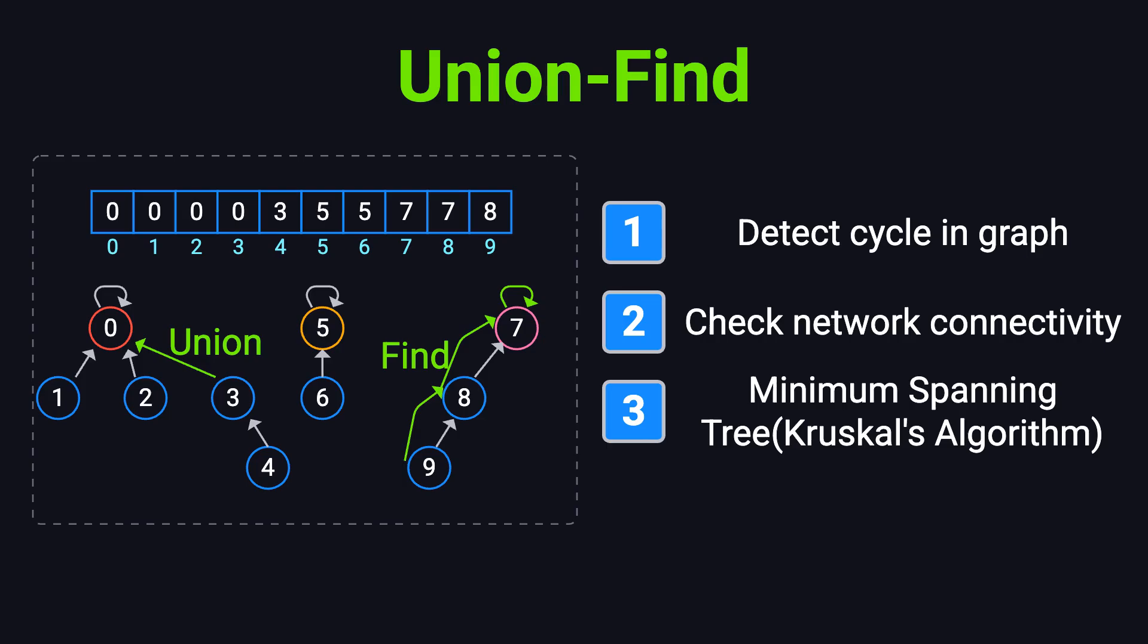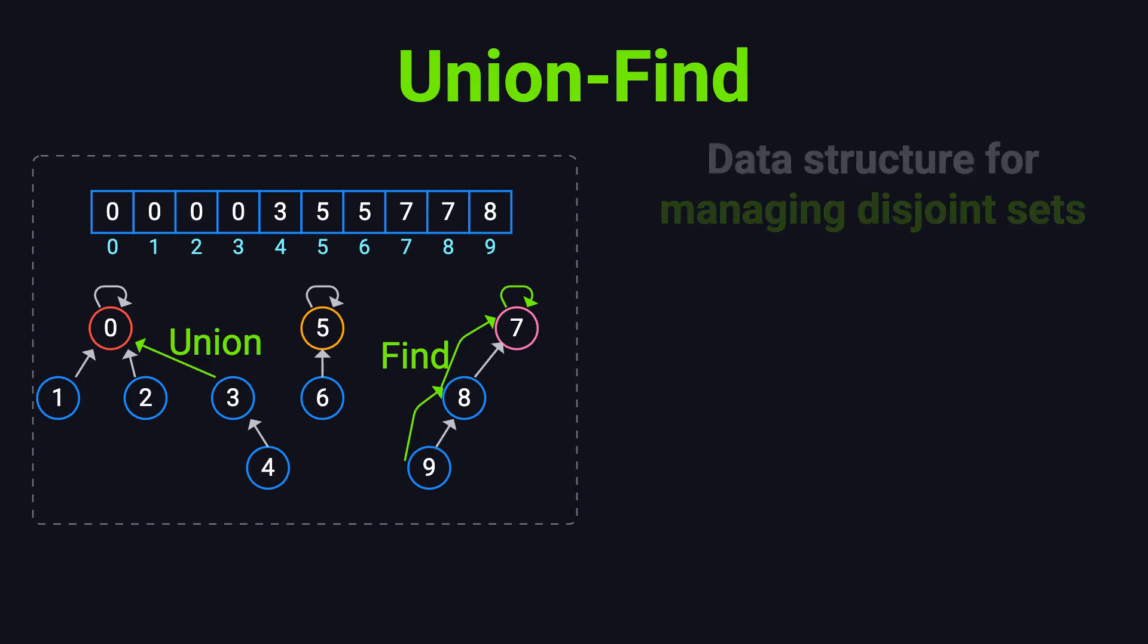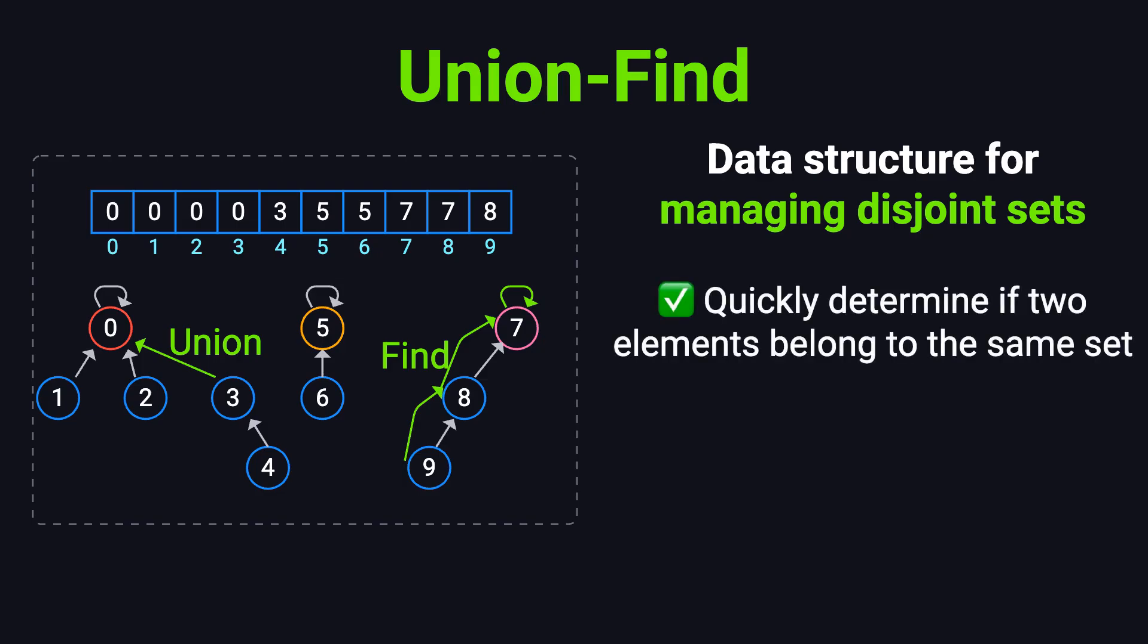So, what exactly is a Union-Find? Simply put, it's a data structure designed to efficiently manage disjoint sets. It allows us to quickly determine whether two elements are in the same set and to merge two sets when needed.